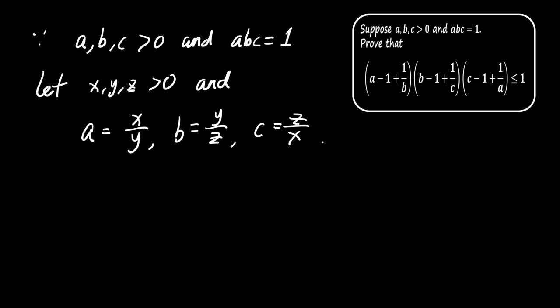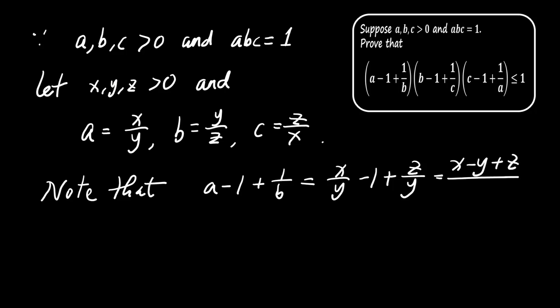This substitution automatically satisfies the condition that A times B times C equals 1. Now, let's break down the terms. The term A minus 1 plus 1 over B becomes X minus Y plus Z, all divided by Y. We can make similar substitutions for the other terms.